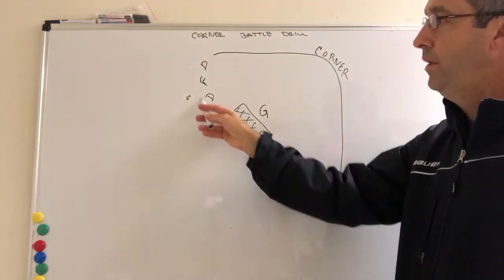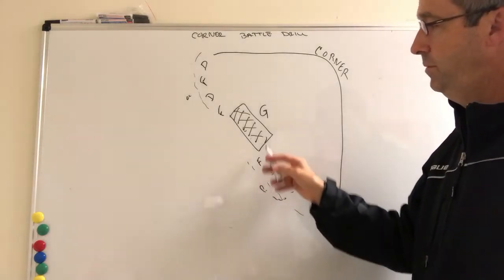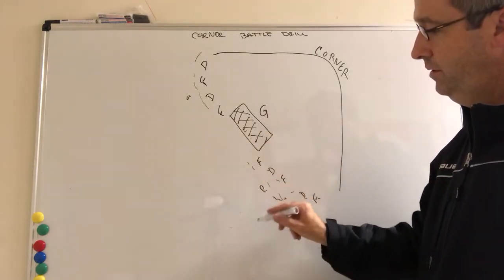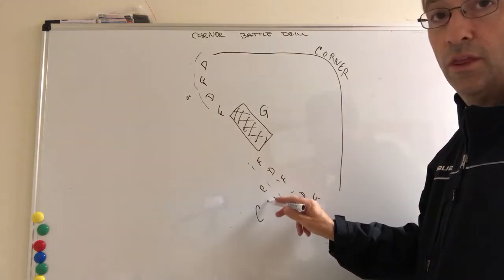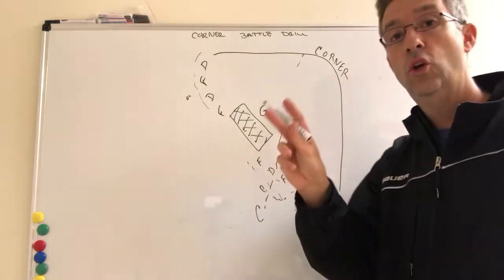Diagonal. All the players line up here. We've got forward, defenseman, forward, defenseman. Goalies here, coaches are back here. The coach will throw a puck into the corner and call out two names.